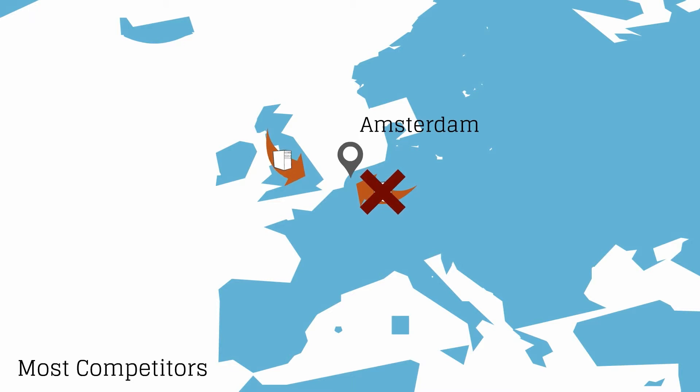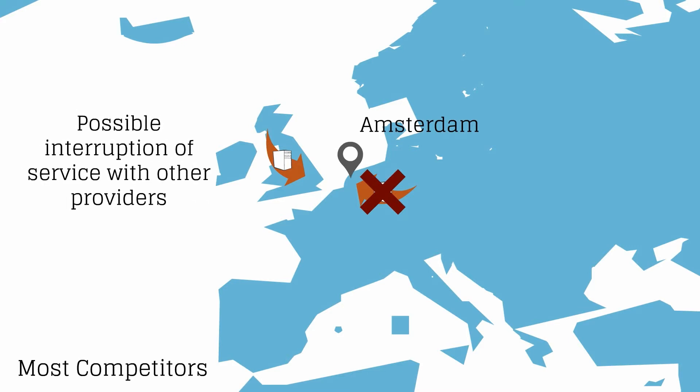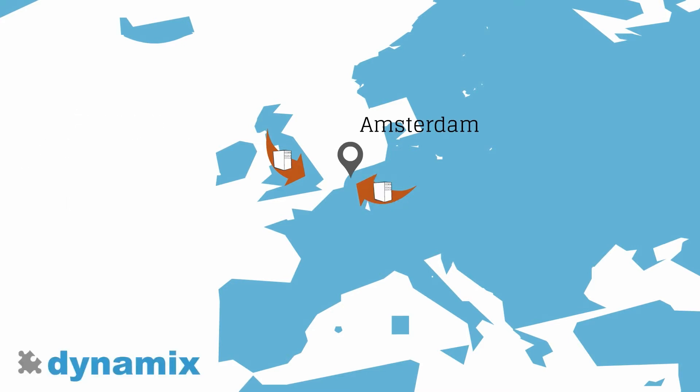Switching servers can take some time, meaning there is a possible interruption of the services. With the Dynamics UC platform, we avoid this.